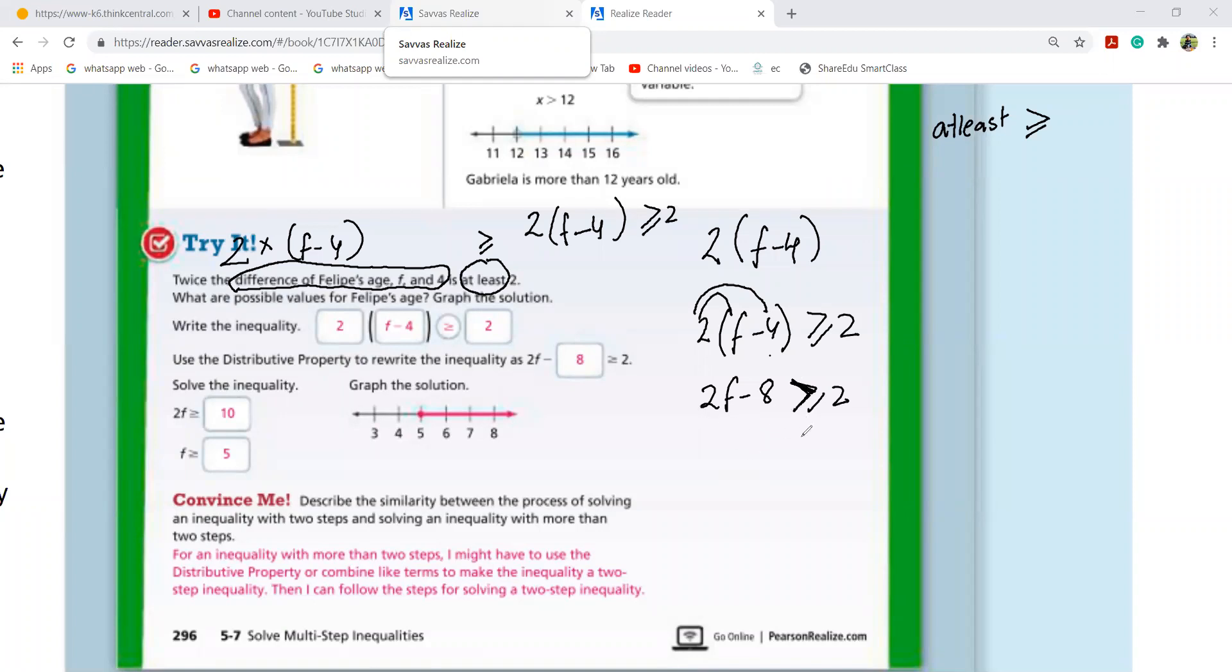Dishan, if you see here, what should go to the other side? 2. 2 is with the f. No, the other 2. 8 has to go to the other side. 2 plus 8. Because my motive is to make f alone. If f wants to live alone in the house, 8 has to shift to some other house. When it shifts, minus becomes plus.